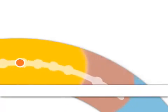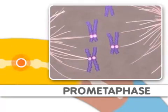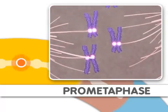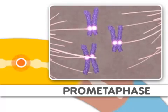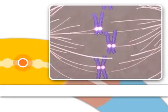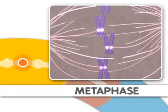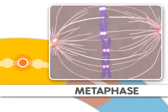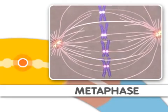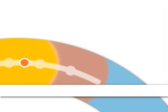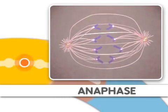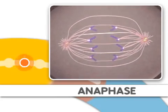Next comes prometaphase, where microtubules attach to the chromosomes. This step is followed by metaphase, where the chromosomes align. Metaphase is followed by anaphase, where the chromosomes separate.